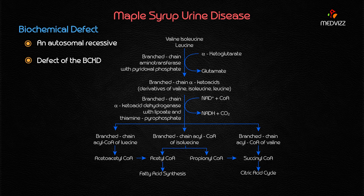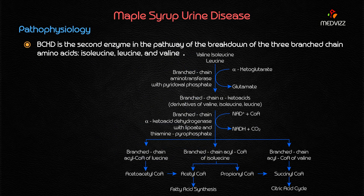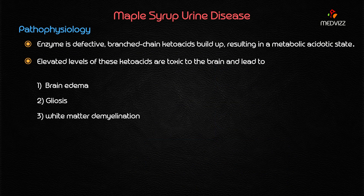Maple syrup urine disease is an autosomal recessive disorder resulting in a defect of BCKD — branched chain keto acid dehydrogenase. BCKD is the second enzyme in the pathway of the breakdown of branched chain amino acids: isoleucine, leucine, and valine. When this enzyme is defective, the branched chain keto acids build up and cannot be metabolized or broken down.